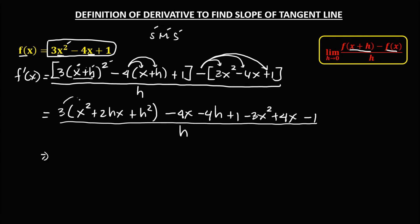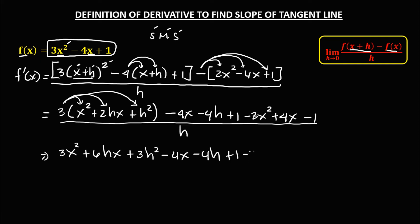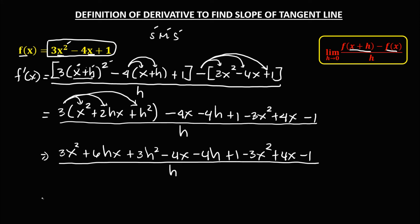Then simplify by distributing the 3: 3 times x squared is 3x squared, 3 times 2hx is 6hx, 3 times h squared is plus 3h squared. Copy: minus 4x, minus 4h, plus 1, minus 3x squared, plus 4x, minus 1, all over h. Combining like terms: 3x squared and negative 3x squared cancel to 0; positive 4x and negative 4x cancel to 0; positive 1 and negative 1 cancel to 0. So we only have 6hx plus 3h squared minus 4h, all over h.